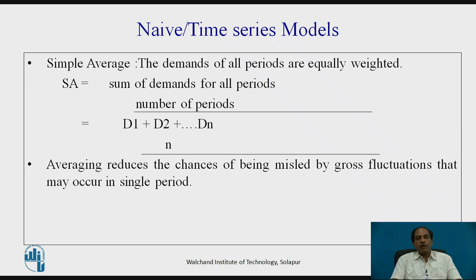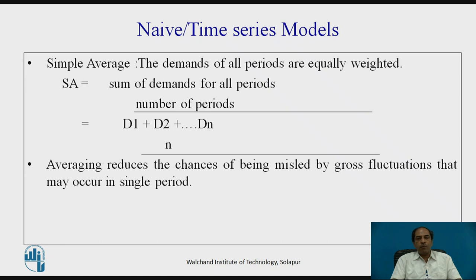Moving to time series analysis, it starts with the basic simple average method. The demand for all periods is equally weighted — the sum of demands for all periods divided by the number of periods, using the formula (d1 + d2 + ... ) / n. The average reduces the chance of being misled by gross fluctuations in a single period, though averages are generally used as a guideline rather than a hard fact.